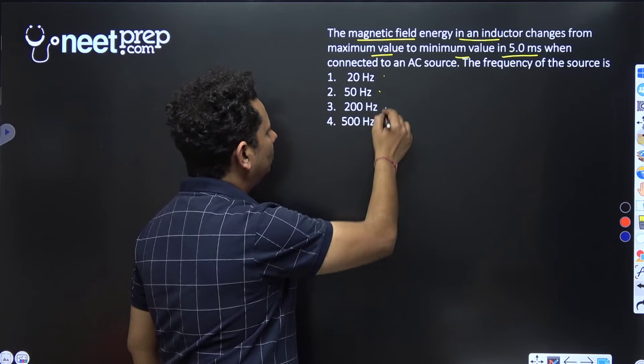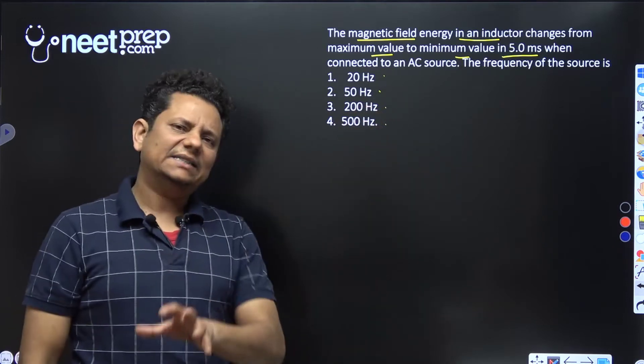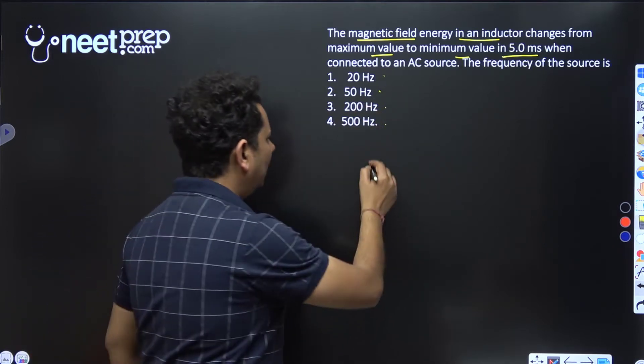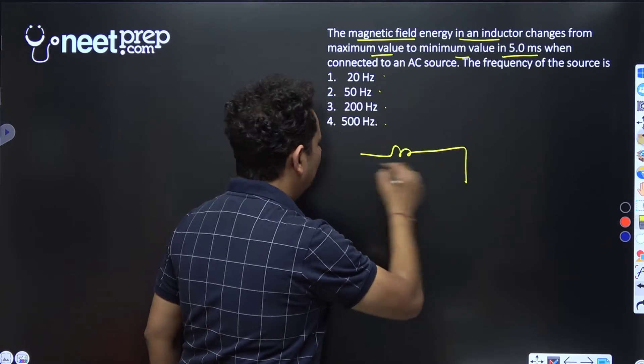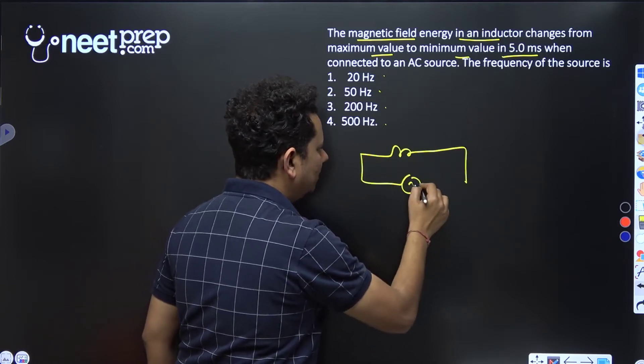The options are 20 Hz, 50 Hz, 200 Hz, and 500 Hz. Now in this scenario, we have an inductor connected to an AC source.